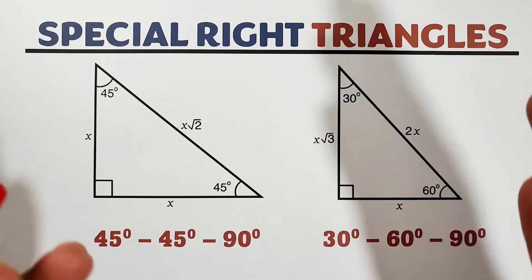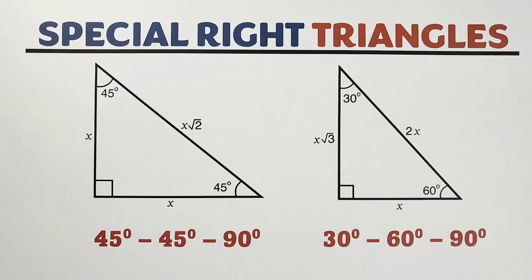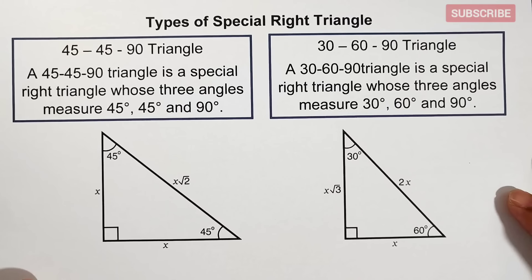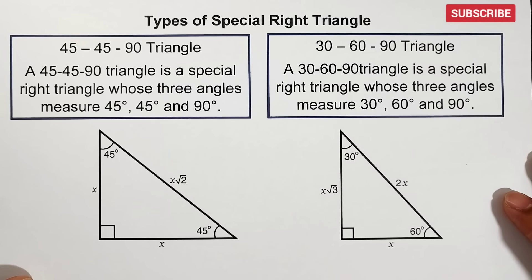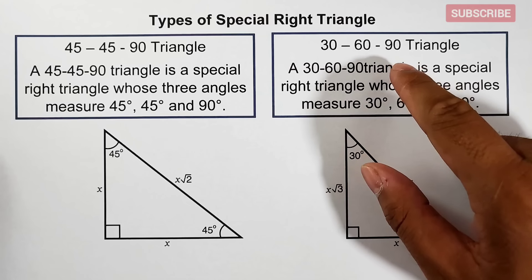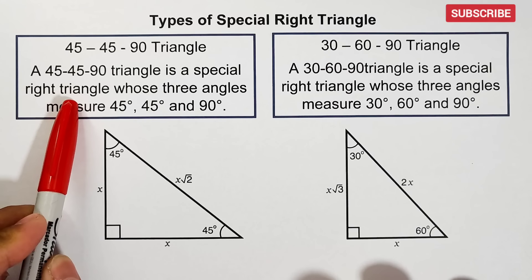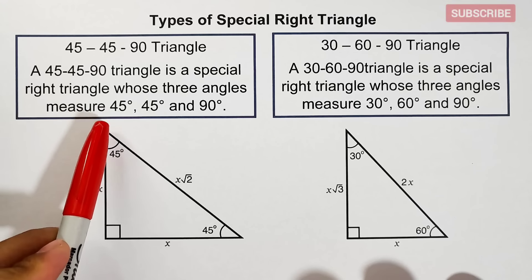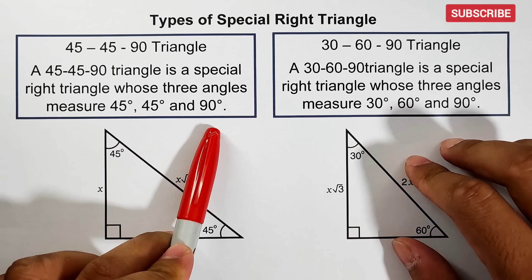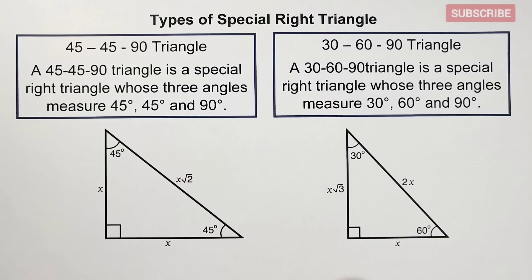Hi guys, it's me, Teacher. In today's video we will talk about the special right triangles. We only have two special right triangles: the 45-45-90 triangle and the 30-60-90 special right triangle. The 45-45-90 triangle has angles measuring 45 degrees, 45 degrees, and 90 degrees, while the 30-60-90 right triangle has angles measuring 30, 60, and 90 degrees.